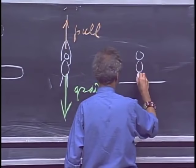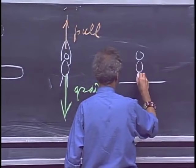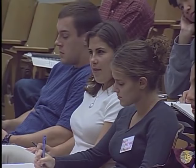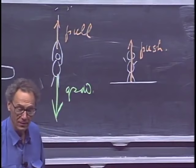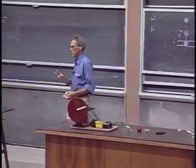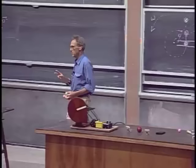Now standing on the floor: do you feel a push or a pull? You feel a push from the floor upward. And in what direction do you perceive gravity? Gravity is downward — in the opposite direction of the push. Notice that in both cases — hanging on a string or standing on the floor — gravity is always in the opposite direction of either the pull or the push.